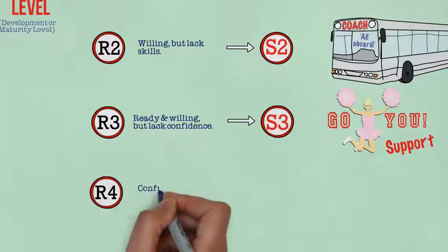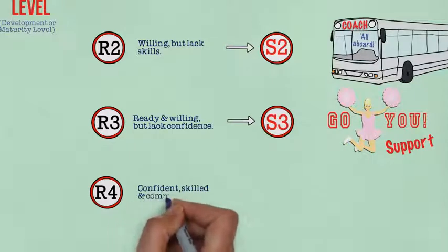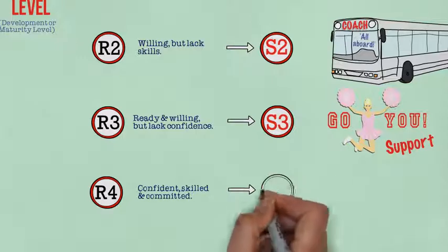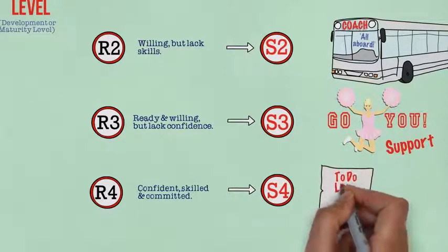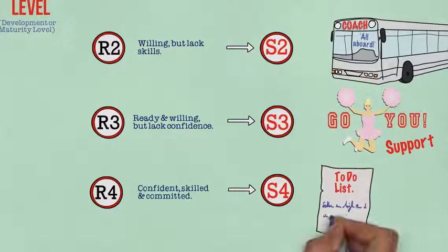R4 colleagues are able to work on their own. They have high confidence and strong skills and they're committed to the task. The appropriate style here is delegating, so S4. Leaders pass most of the responsibility onto the follower or group. The leaders still monitor progress but they're less involved in decisions.